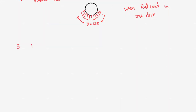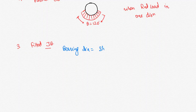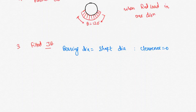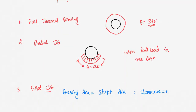The third classification is the fitted journal bearing. The only difference between a fitted bearing and the normal journal bearing we discussed before is that in a fitted bearing there is no clearance between the bearing diameter and the shaft. Both diameters are the same, meaning the clearance is zero — zero clearance between the bearing and the shaft. That is known as our fitted journal bearing. In the normal case, bearing diameter D1 is greater than shaft diameter.